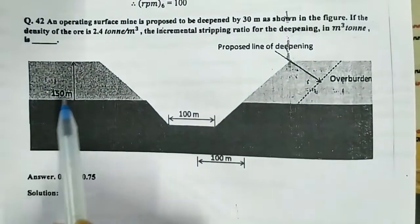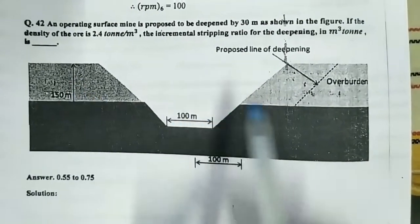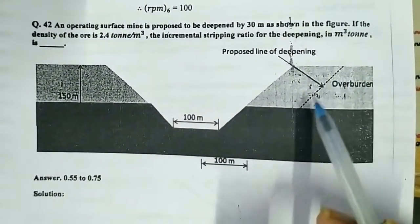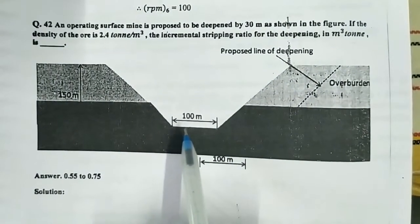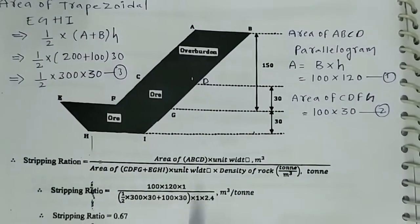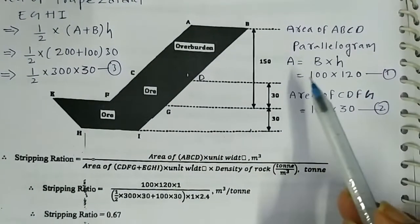Up to 150 meters is the overburden. This is the proposed line of deepening. Here the base is 100 meters. So this is the layout given in question.